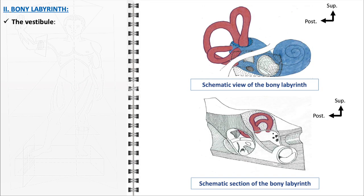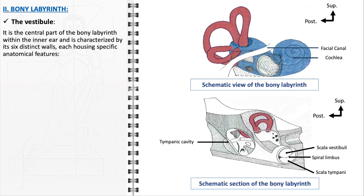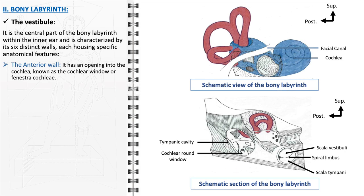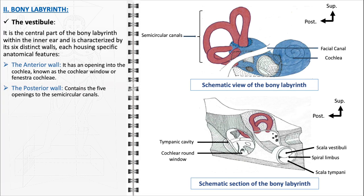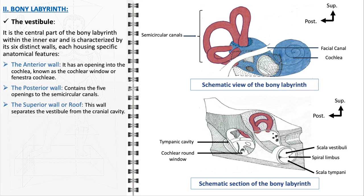The vestibule, a central element within the bony labyrinth, plays a pivotal role in the auditory and vestibular systems. Characterized by its six distinct walls, the vestibule is a hub where key structures of hearing and balance converge. On the anterior wall, there is a notable opening into the cochlea known as the cochlear window or fenestra cochlea. The posterior wall is distinguished by five openings that lead to the semicircular canals, allowing for the passage of endolymph. The superior wall, or roof, separates the vestibule from the cranial cavity, protecting it from potential infections and other pathologies.